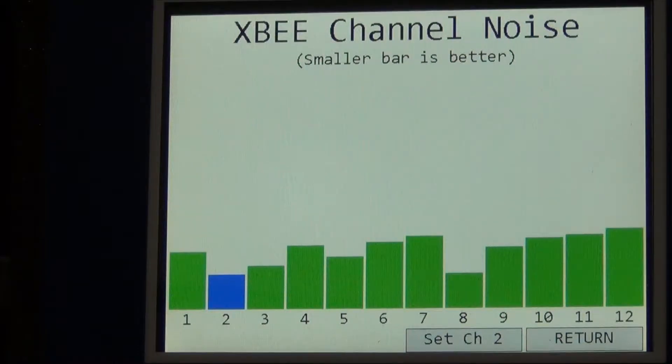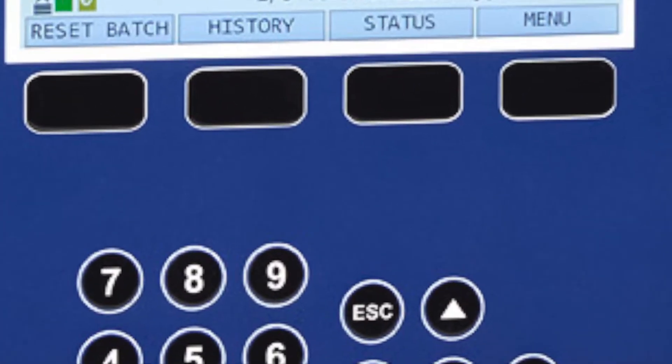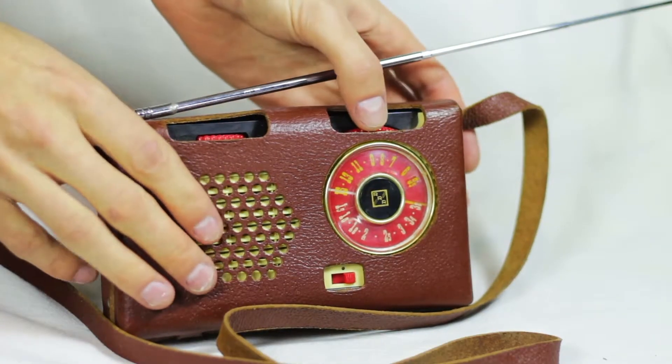To make using the system even easier, you'll see the label to set the unit to the new channel. Press the soft keypad directly below the screen and all the tools have been changed to the new channel.